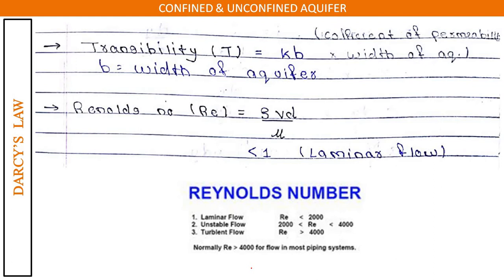Transmissibility is denoted by capital T and equals k times b, where k is the coefficient of permeability and b is the width of the aquifer. So transmissibility T = k × b.